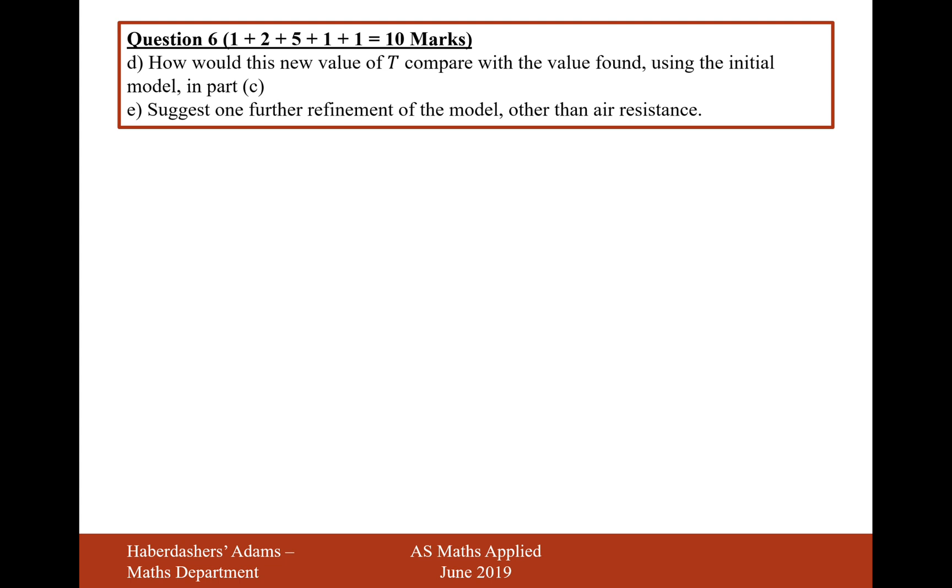Suggest one further refinement of the model other than air resistance. Well, you could have the effect of wind, you could have the dimension of the parachute, you could have the more accurate measurement of g, etc. So another further improvement on the model, maybe the surface area of the parachutist, maybe they're a skinny person or a bigger person, however you politically correctly want to say that. So yeah, any of those variables that could be included. So there we are, that's the answer for question 6, worth 10 marks in total there. Let's now move on to question 7.